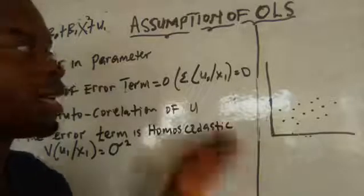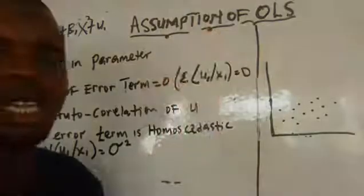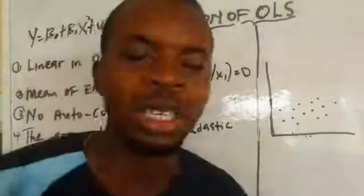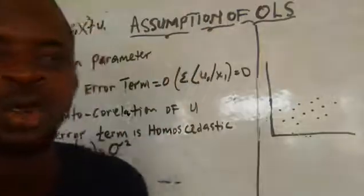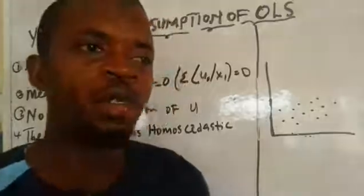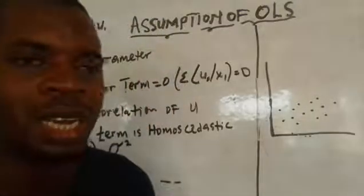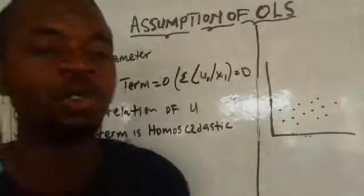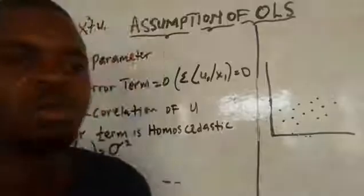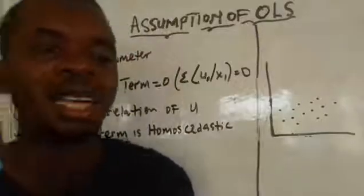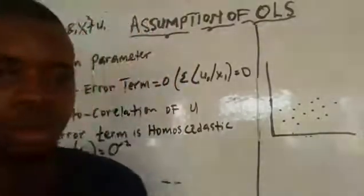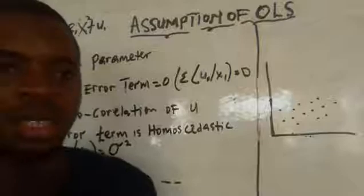In this video, we are going to be looking at the assumptions of ordinary least squares. When we talk about assumptions of ordinary least squares, we are looking at the conditions which we must meet if we want to use ordinary least squares. Because if we don't meet the conditions, we might not be able to get a predictable value at the end of using the least square estimator.